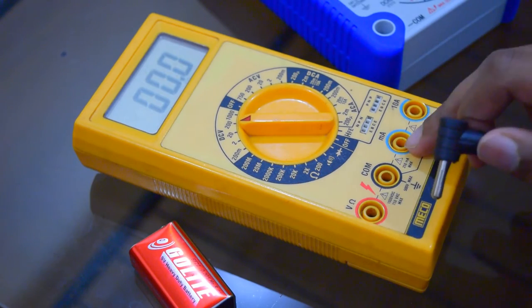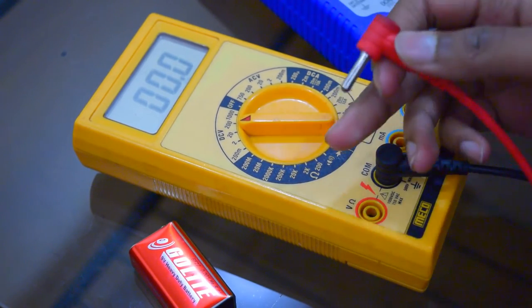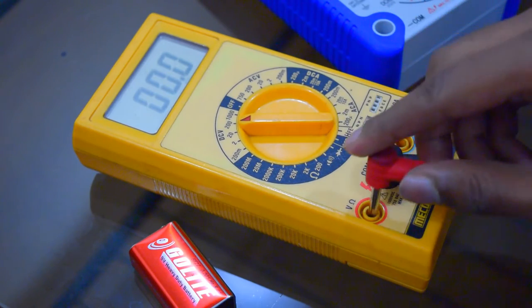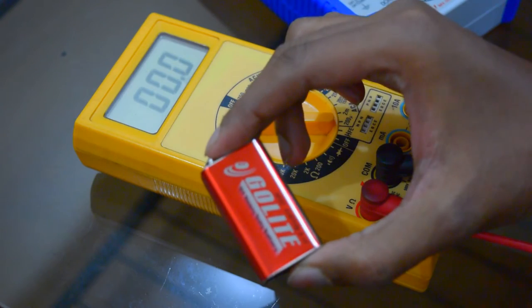Now I'm connecting the probes to the multimeter. The black one goes to the com terminal and since I'm measuring the voltage, the red one goes in the voltage terminal. Now I'm going to measure the voltage of this 9 volt battery.